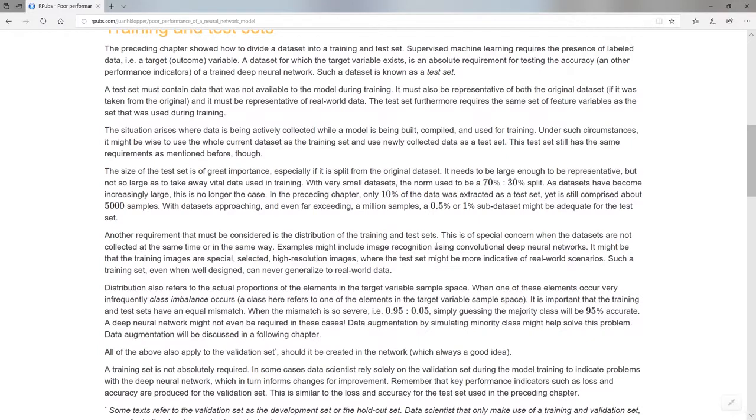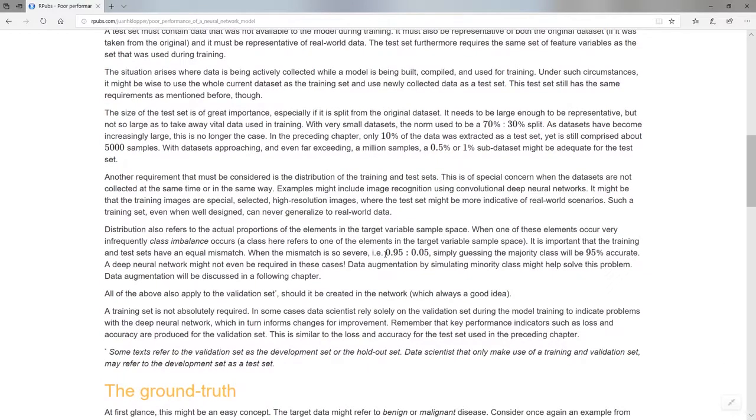That brings us to this point of a class imbalance, one of the types of distribution where we think about distribution in our data. Think for instance of a situation where one of the elements in the target variable occur very infrequently. That 95% of the target variable is just one class, one of the elements, and less than 5% is the other. That just means if that really exists I might as well just guess the majority class every time I'm going to be right 95% of the cases. Why do I need a deep neural network? If it's because there's something wrong with the data collection that there's this class imbalance then you have to do something about that. One way to go about it of course is just better data collection. But if that is not possible look at something like data augmentation which we'll discuss later.